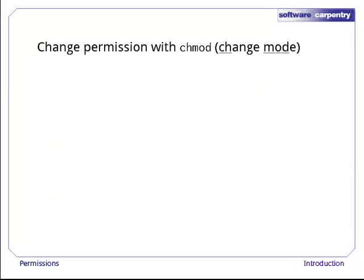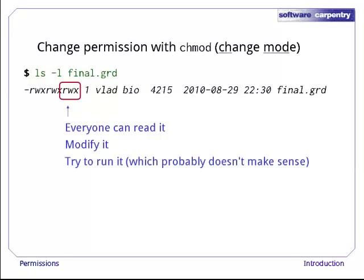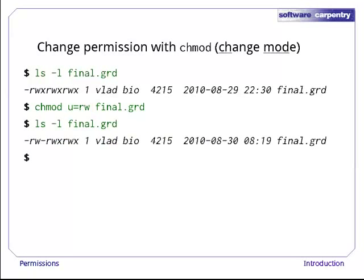So much for looking at permissions. If we want to change them, we use the chmod command — the name stands for Change Mode. Here's a long-form listing showing the permissions on the final grades in the course Vlad is teaching. Whoops — everyone in the world can read it, and what's worse, modify it. A crafty student could go in and change his or her grade. Here's the command to change the owner's permissions to rw-. The U signals that we're changing the privileges of the user, i.e. the file's owner, and rw is the new set of permissions. A quick ls -l shows us that it worked.